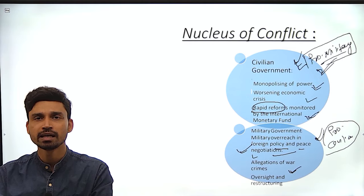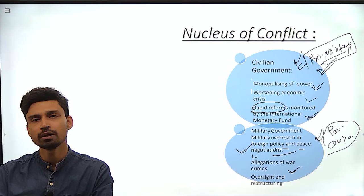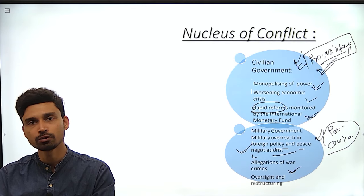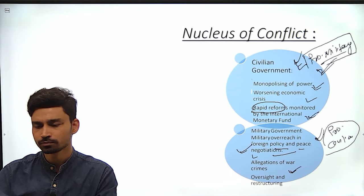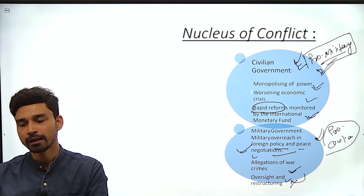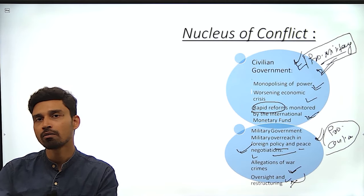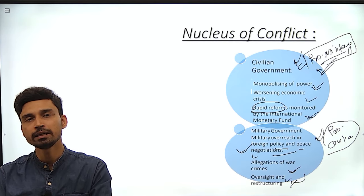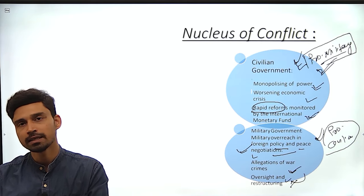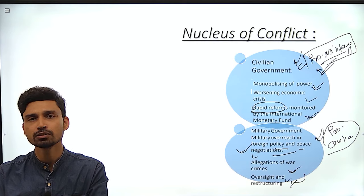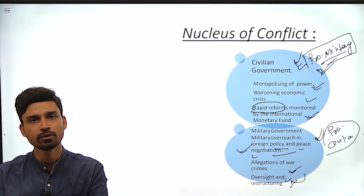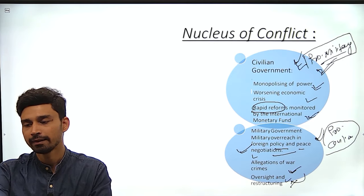There are also serious allegations of war crimes against military leaders — particularly the Khartoum massacre during the revolution where many civilians were killed. During al-Bashir's time, many military leaders were perpetrators of genocide against non-Arab Sudanese. Pro-civilian factions believe the military should not function with a free hand and that there should be oversight and restructuring, including of the Rapid Action Forces. These demands were completely overlooked by the military, which is why the military staged the coup and arrested or detained most top civilian leaders.